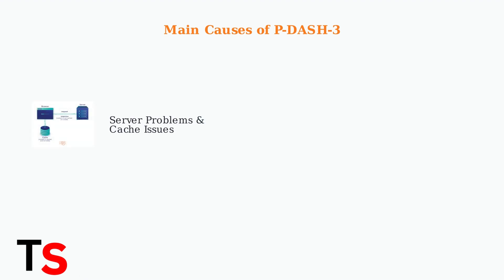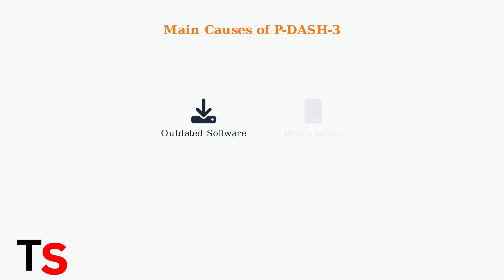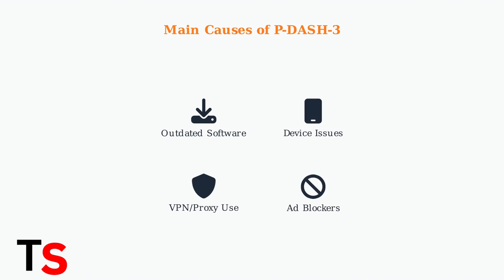Crunchyroll servers may be down or experiencing slowdowns. Additionally, accumulated cache and cookies in your browser or app can cause conflicts, as shown in this data flow diagram. Other common causes include outdated browser or app software, device hardware or software problems, VPN or proxy usage which Crunchyroll may block, and ad blockers that can interfere with video content.